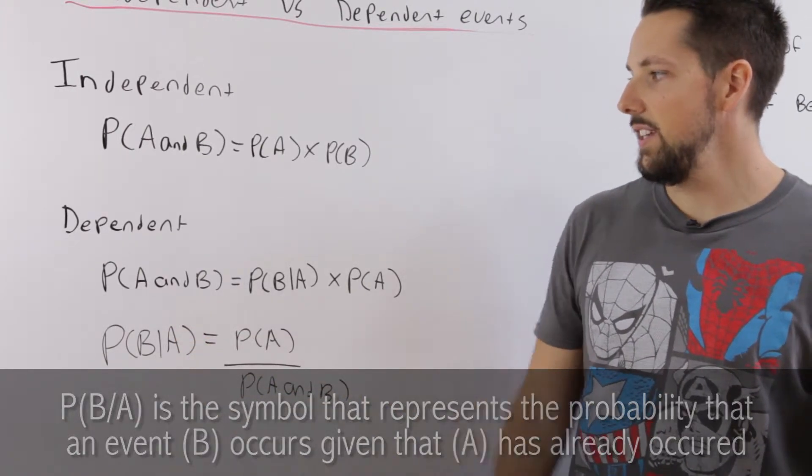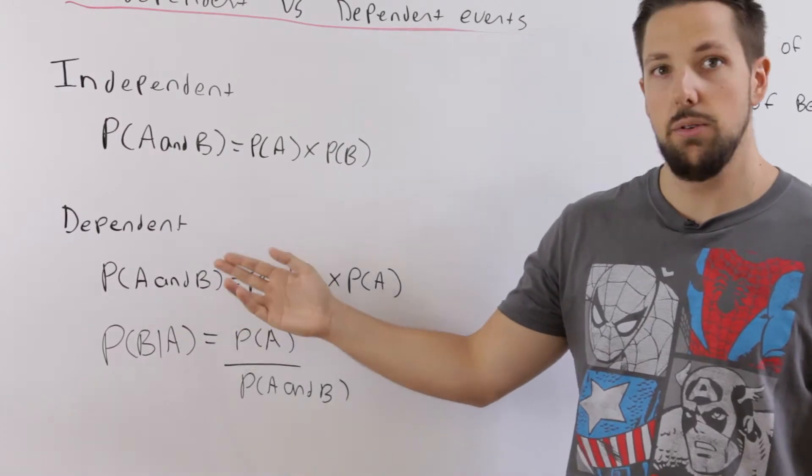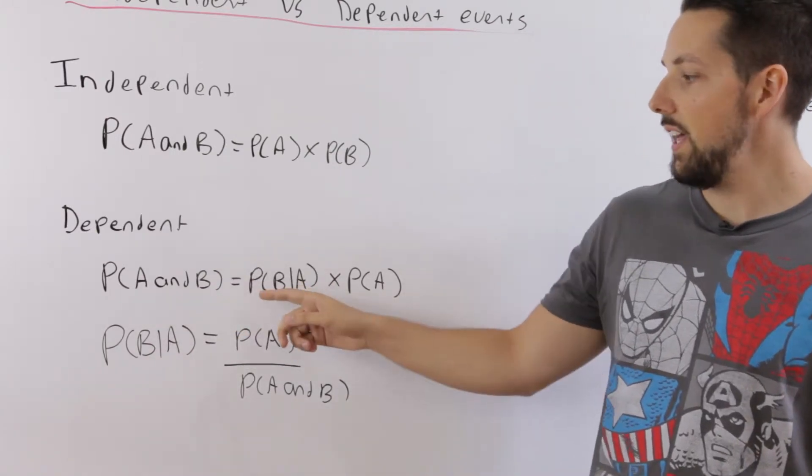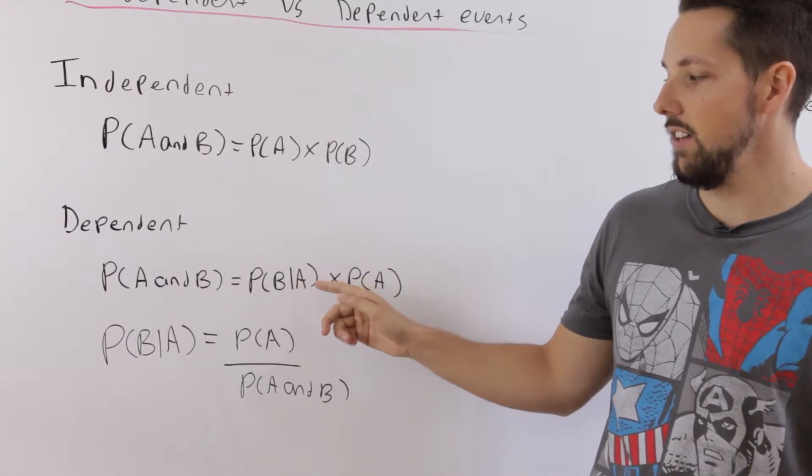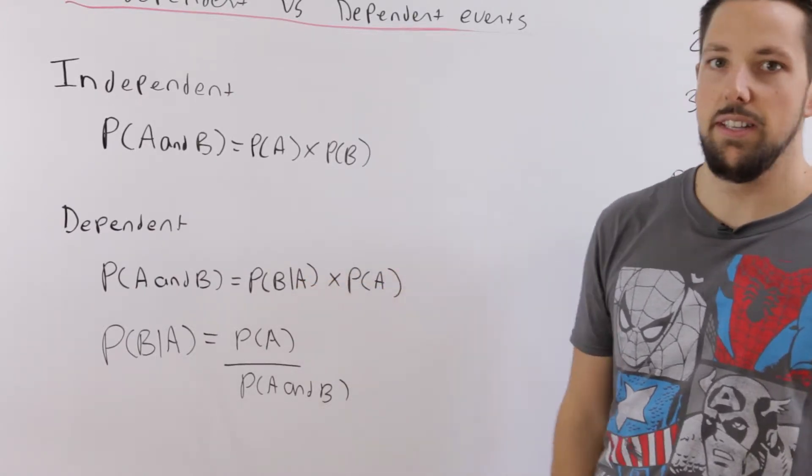To find the probability of A and B happening if the two events are dependent, you multiply the probability that B occurs given that A has already occurred times the probability of A.